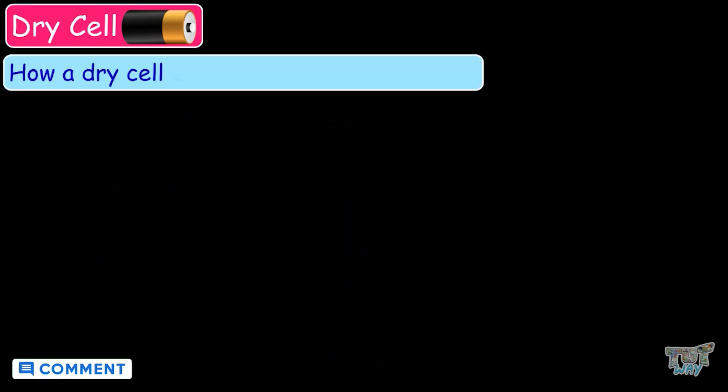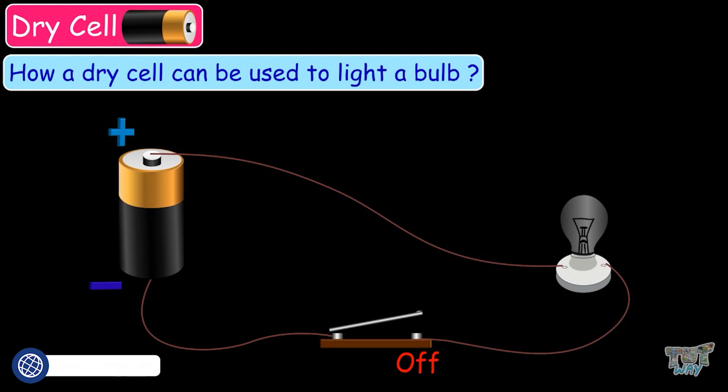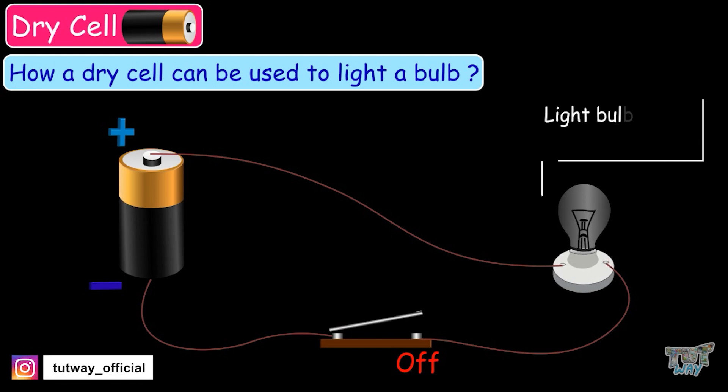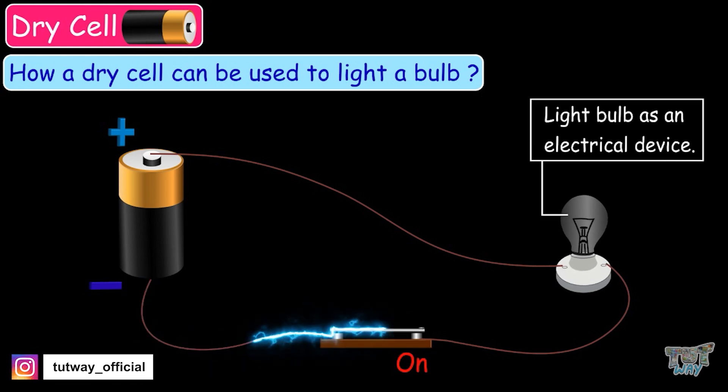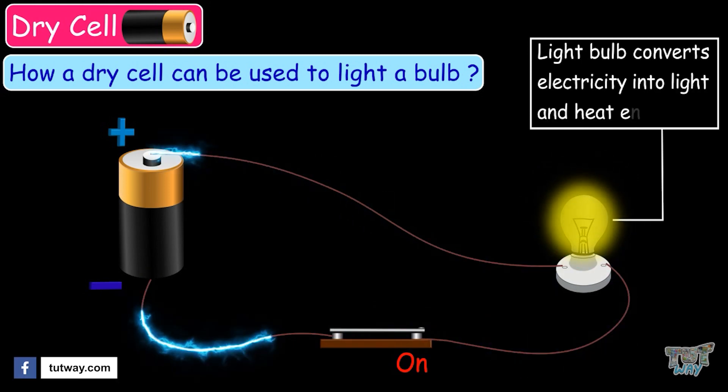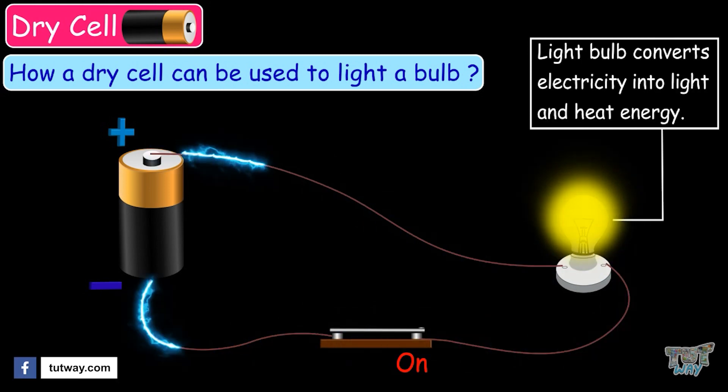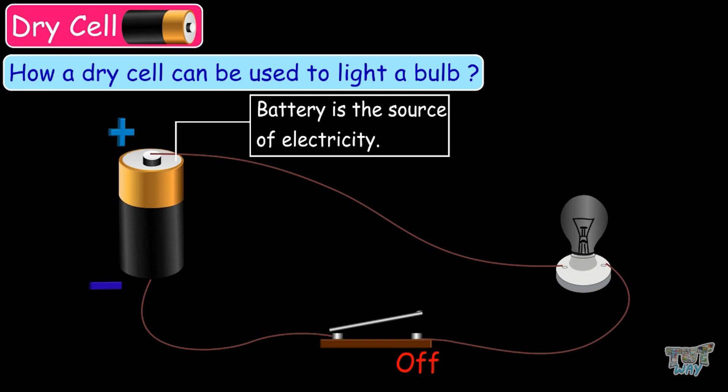Now, let's discuss how a dry cell can be used to light a light bulb. For that, we will consider a simple electric circuit. In this circuit, we have a light bulb as an electric device, which converts electricity into heat and light energy. And the battery is the source of electricity.